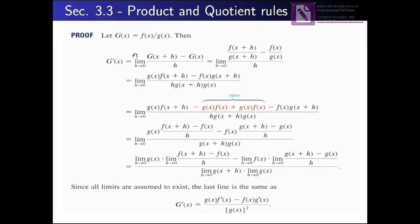The proof of the quotient rule follows the same approach used for the product rule. We assume φ equals f over g, then to find φ prime(x) we use the limit definition: the limit of φ(x+h) minus φ(x) over h as h approaches 0. We replace x by x+h, so φ(x+h) equals f(x+h) over g(x+h), minus g(x) equals f(x) over g(x), all divided by h.